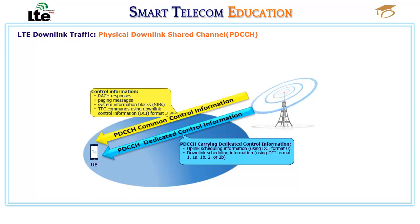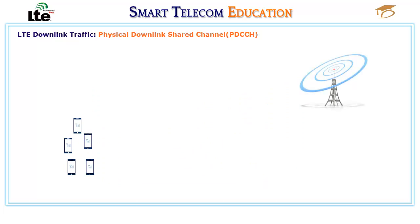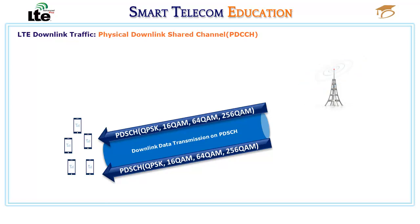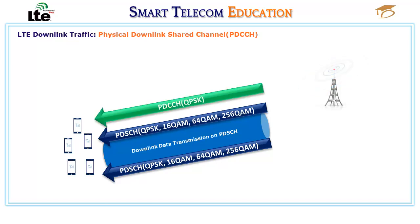During downlink data transmission, the procedure is as follows. Once the scheduler has made its decision, it will format the packet for transmission over PDCCH. Since the PDCCH is a shared channel, the UE does not know when their transmissions will be sent, what radio resources have been assigned to them, and what formats are being used. The eNodeB uses PDCCH to convey this information.